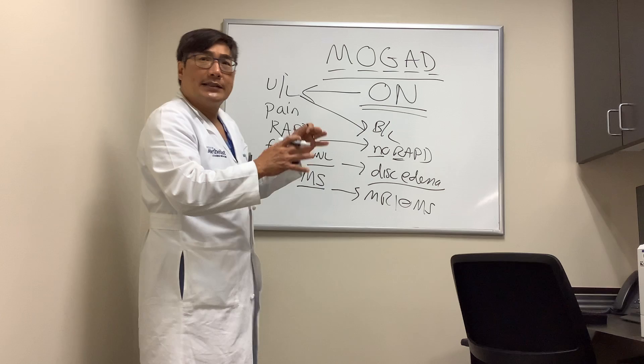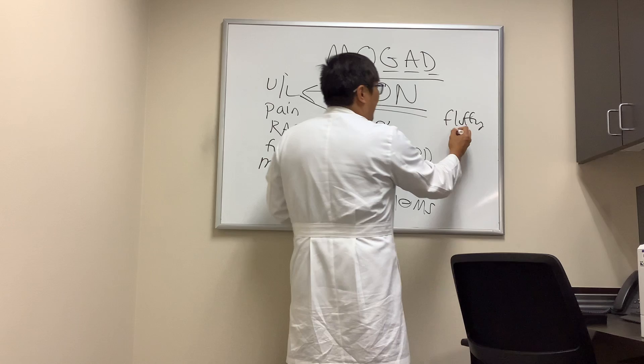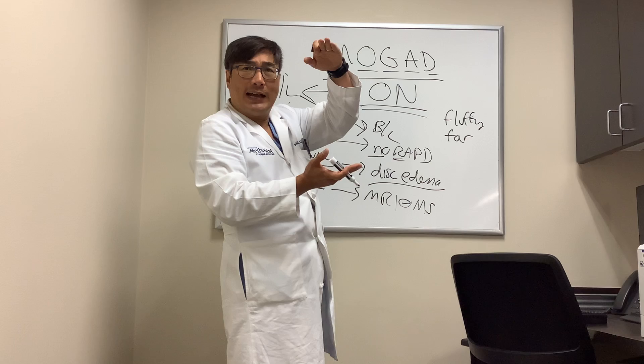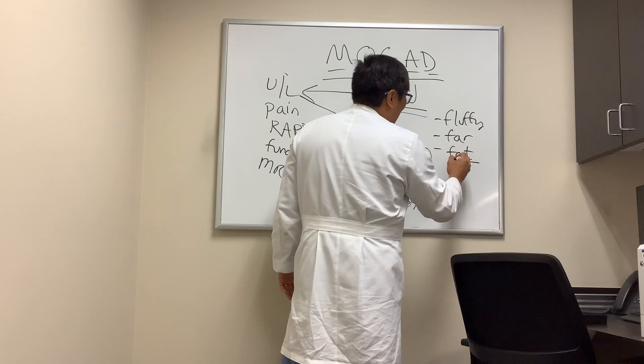In MOG, the MRI instead shows fluffy lesions that are large and confluent, either in the brain or in the nerve itself. We look for lesions that are longitudinally extensive — defined as greater than one half of the distance of the optic nerve — or longitudinally extensive transverse myelitis of three or more vertebral segments, or longitudinally extensive atrophy of the spine.